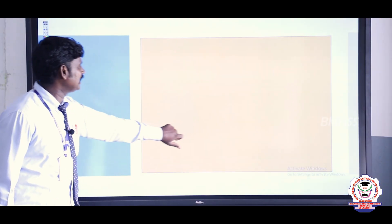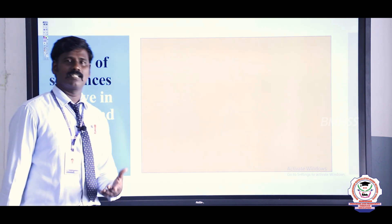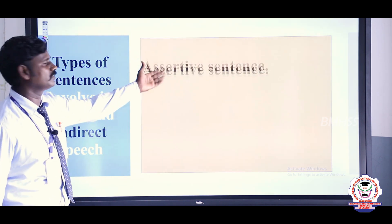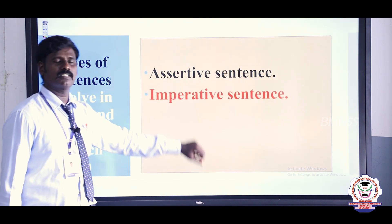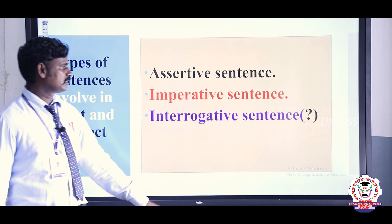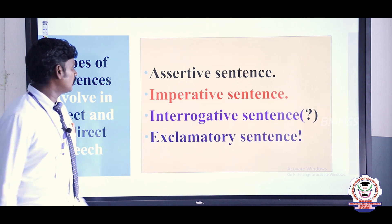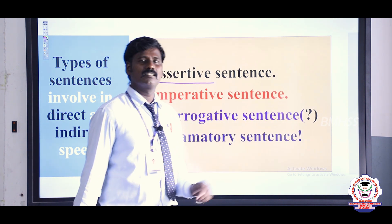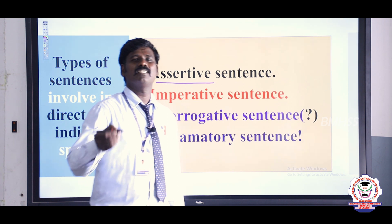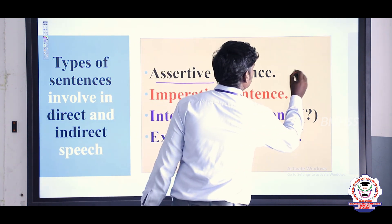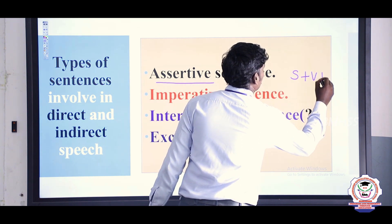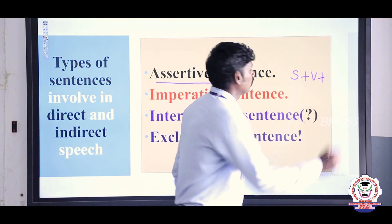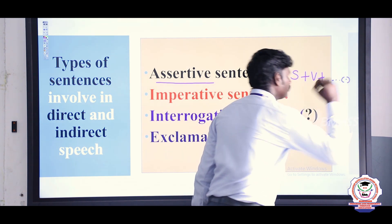Now we shall see the types of sentences involved in direct and indirect speech. There are four types: assertive sentence, imperative sentence, interrogative sentence, and exclamatory sentence. Assertive sentence is also known as a declarative sentence or statement, generally used to convey messages. We begin it using subject plus verb and end with a full stop.